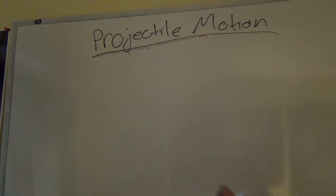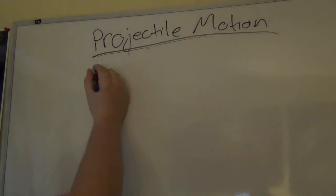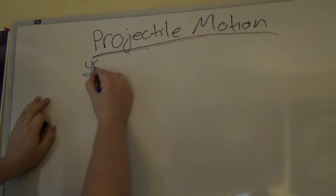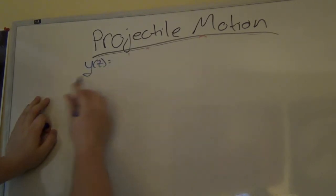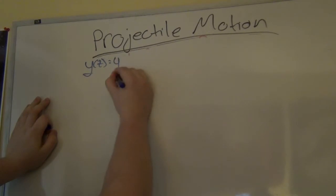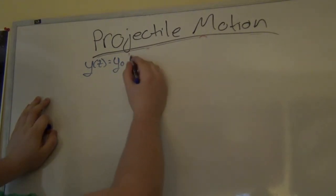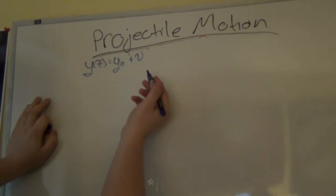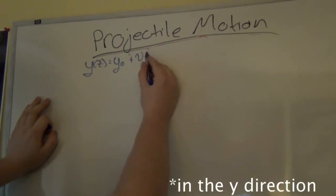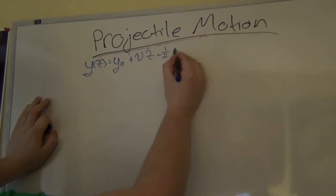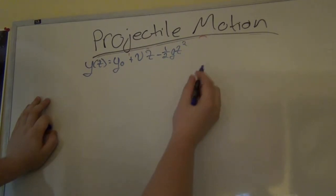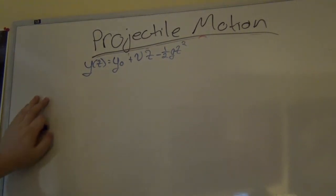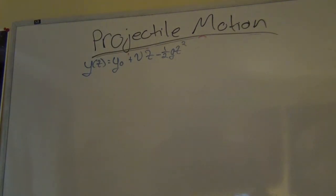This is just a kinematic equation, the most common thing you'll use when talking about projectile motion in physics 1. y as a function of time equals the initial height y-naught, plus the initial velocity v times time, minus one-half g t-squared. In the kinematic equation it's a t-squared for x or y, but on Earth you write g t-squared because that's the only constant acceleration pulling it down.